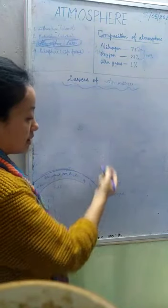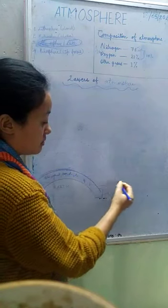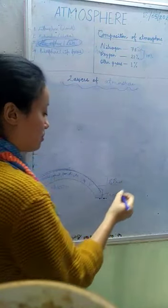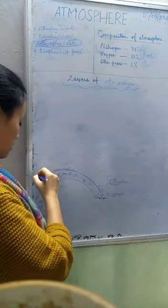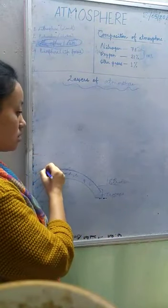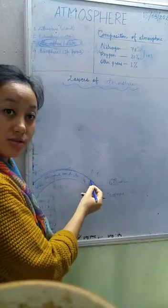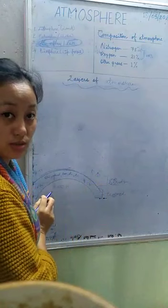After this layer, another layer is there and that is stratosphere. Here what happens? It extends from 16 to 50 kilometers. Here height increases, temperature increases.